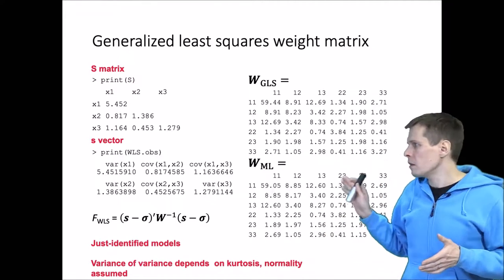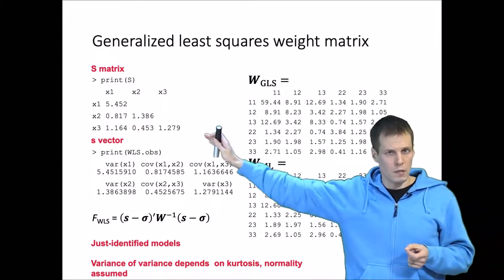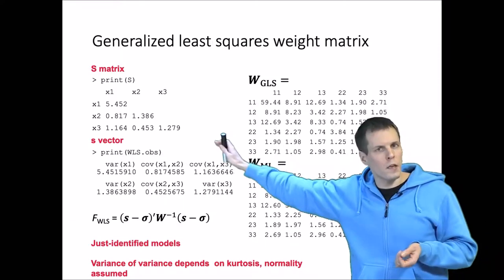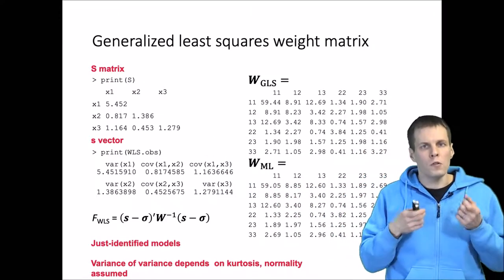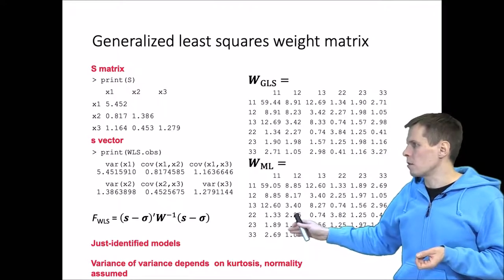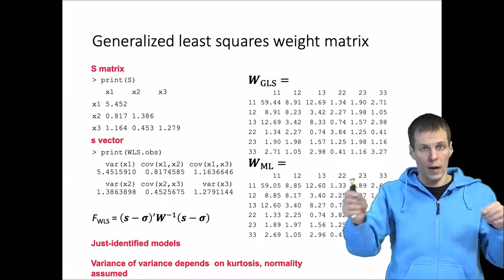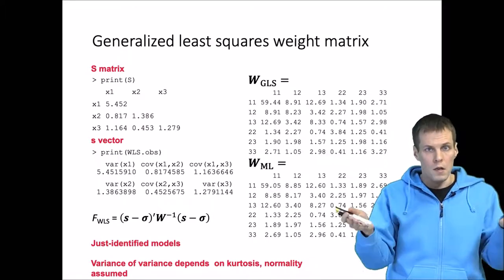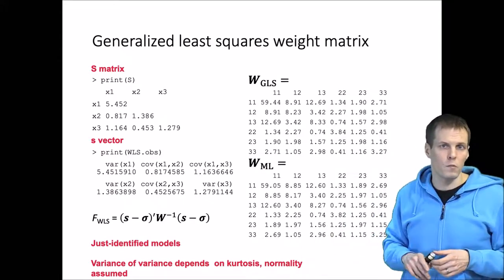The problem here is that we are estimating a large matrix based on a small correlation matrix, so we cannot estimate these elements uniquely — this matrix is larger than that matrix and there is some redundancy. Particularly, we assume the data are multivariate normal with no excess kurtosis. For example, how much x1 and x3 correlate versus x2 and x3 correlate — and how much those correlations co-vary over repeated samples — depends on the kurtosis of the data. If that assumption is violated, these weight matrices will produce biased results.